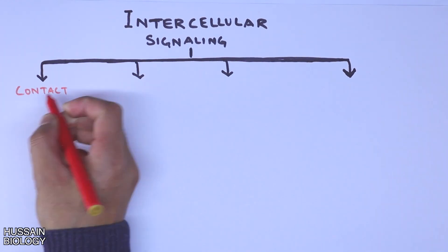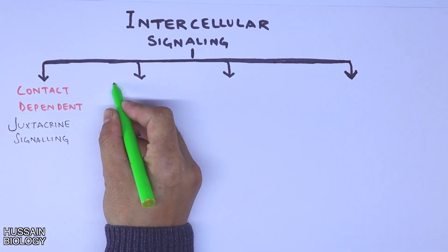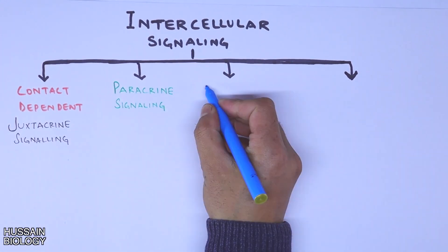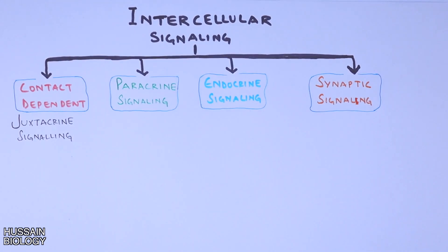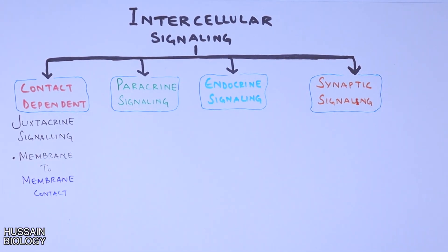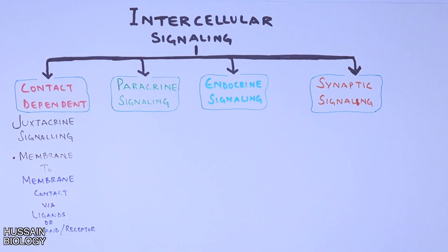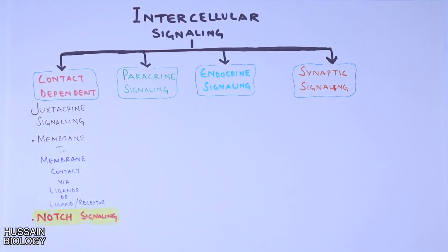First is contact-dependent signaling, also termed as extracrine signaling. It occurs via membrane-to-membrane contact through ligands, or through ligand-receptor binding between the two cells. One notable example is the notch signaling pathway, which occurs between cells through ligand binding and its interactions.